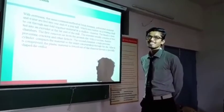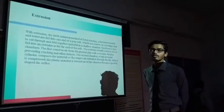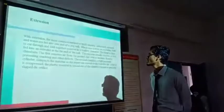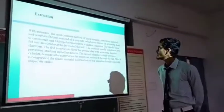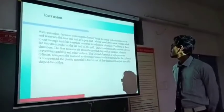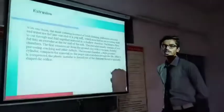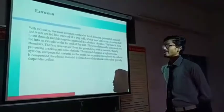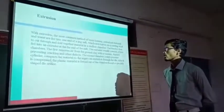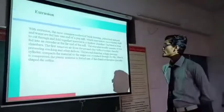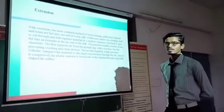Our second step is extrusion. With extrusion, the most common method of unit forming, pulverized material and water are fed into a pug mill which uses blades on a rotating shaft to mix the material. The mixture is then fed into an extruder to remove air layers with a vacuum, preventing cracks and other defects.